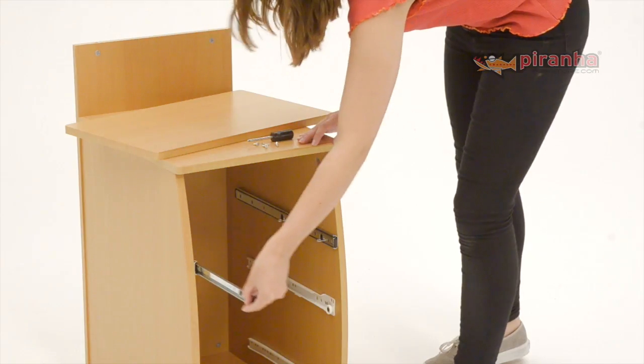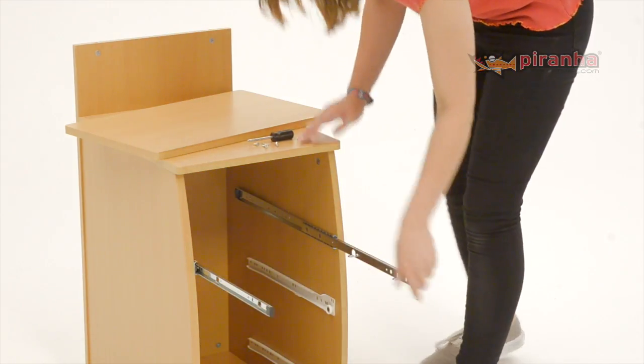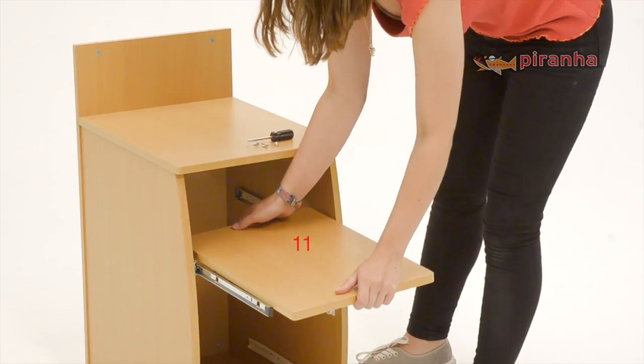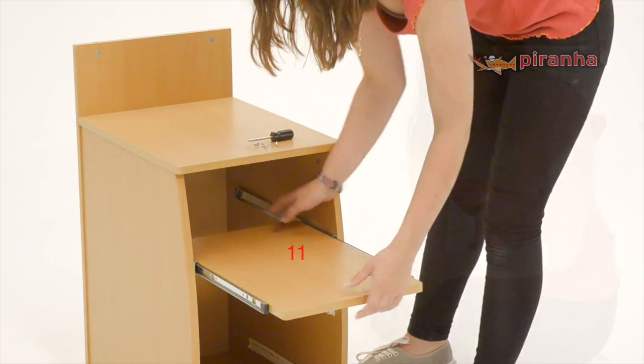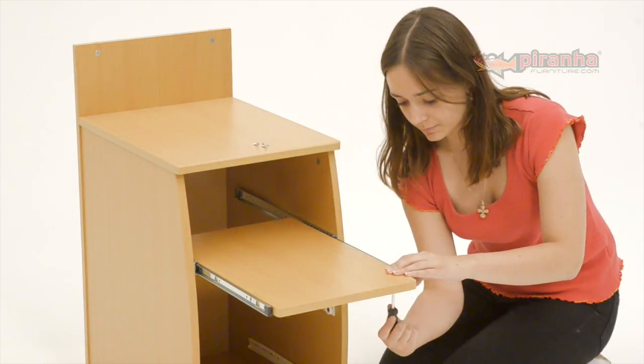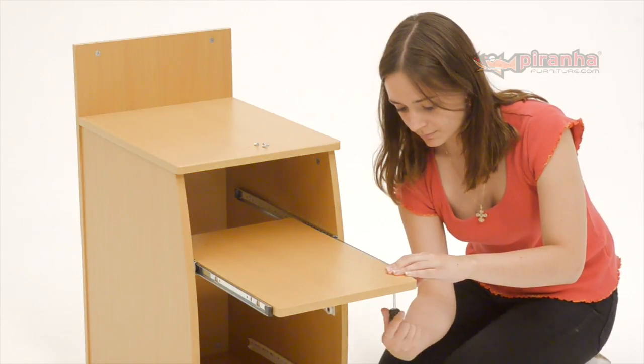Step 10. Extend the top runners and sit the sliding shelf onto them. It will be held in place by four metal tabs on the runners. Secure the shelf by screwing through these tabs into the pre-drilled holes.